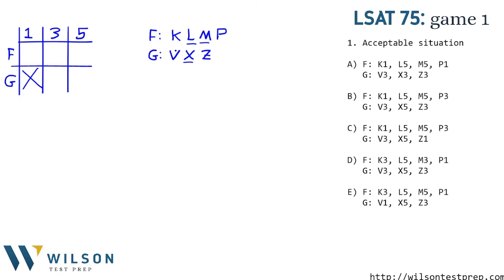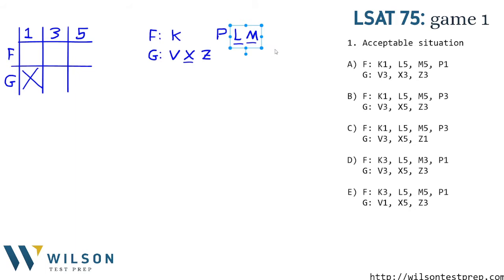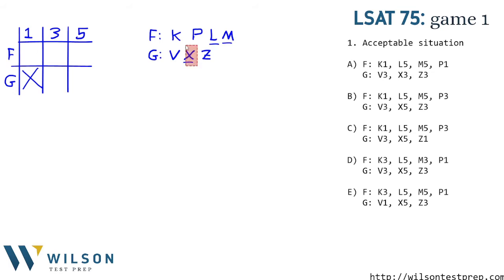So L and M are going to be higher than P — we don't know exactly the order between L and M — and X is going to be higher than both V and Z.